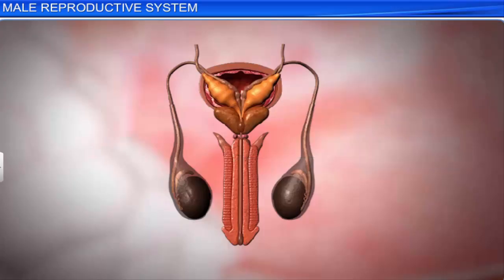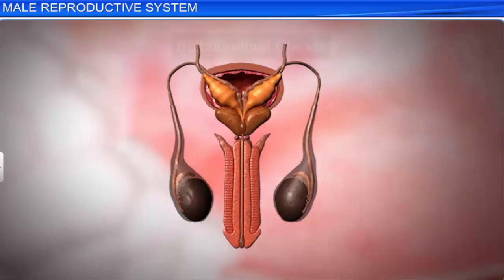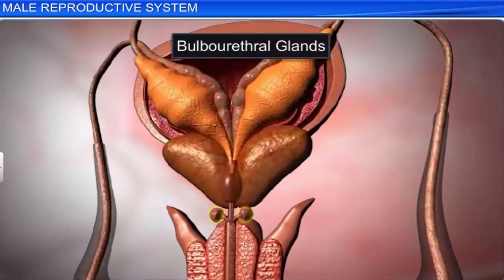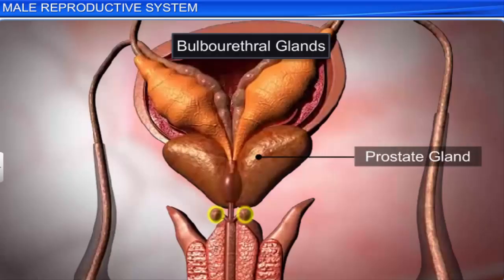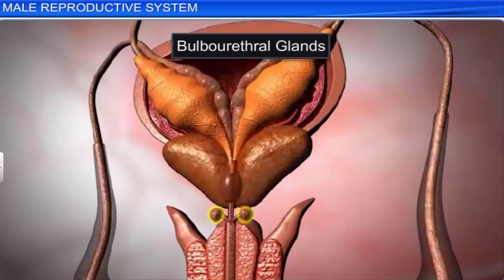The prostatic fluid contains calcium, citrate, and phosphate ions. The bulbourethral glands, or Cowper's glands, are pea-sized structures lying posterior to the prostate gland and at the base of the penis. Their secretions help in the lubrication of the penis.